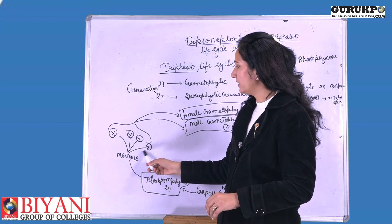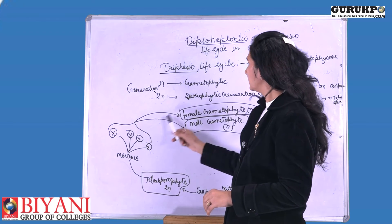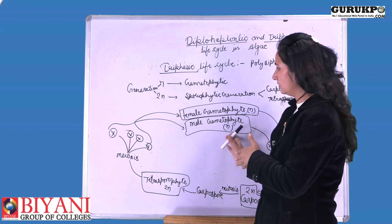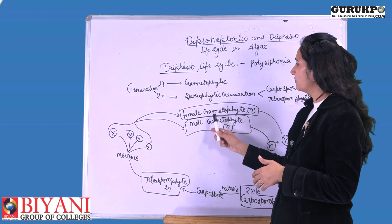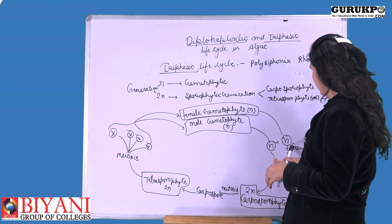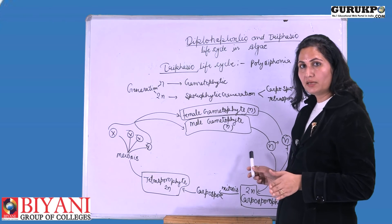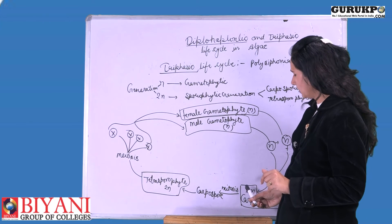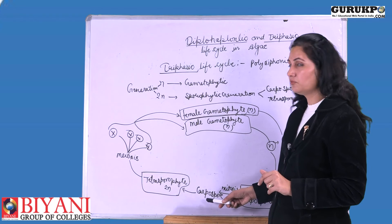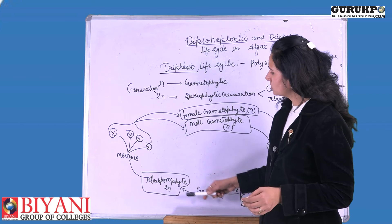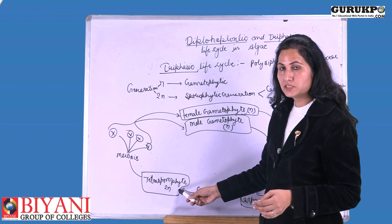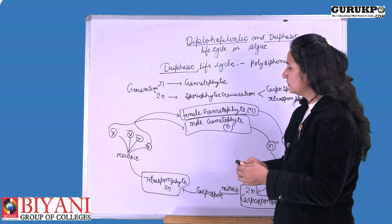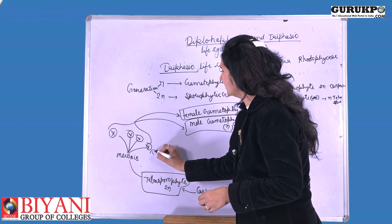These tetraspores are haploid in nature because they are formed by reduction division. So they germinate and form male and female gametophytic plants. The male and female gametophytes form male and female gametes. These gametes fuse through syngamy and form the carposporophyte, which is diploid in nature. The diploid carposporophyte undergoes mitosis and forms carpospores. These carpospores germinate and form the tetrasporophytic plant, which is diploid. It then undergoes meiosis and forms tetraspores, which are haploid.